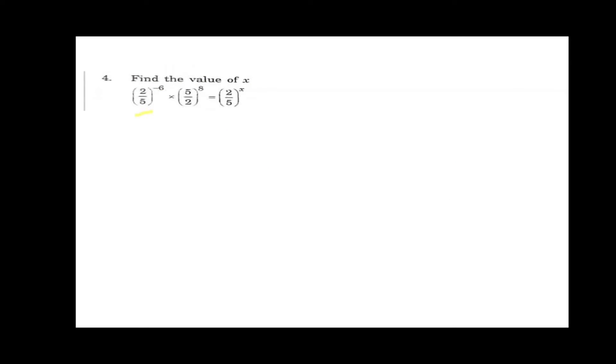Now find the value of x. 2 by 5 whole power minus 6 into 5 by 2 whole power 5 equals 2 by 5 whole power x. Here x is in the power. In this case we need to equal the bases.